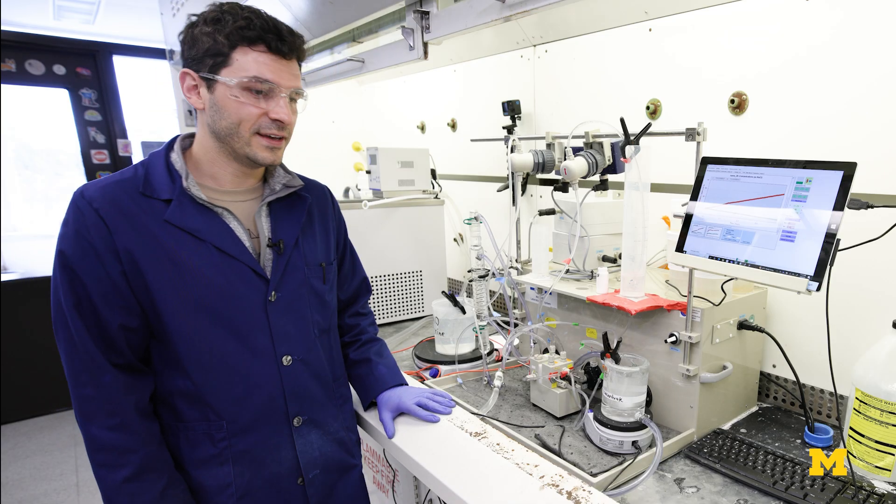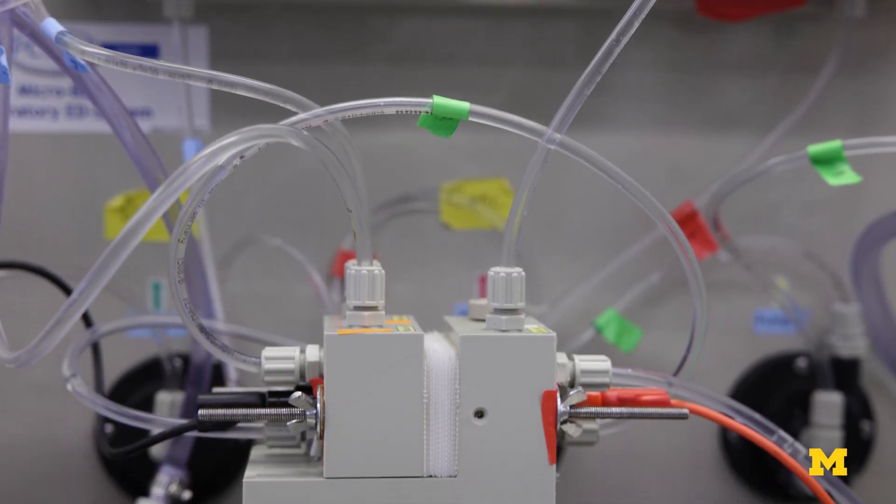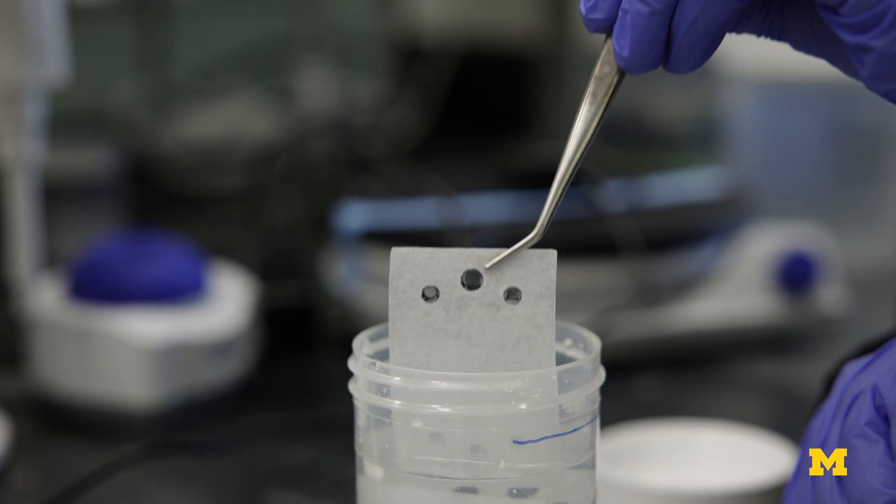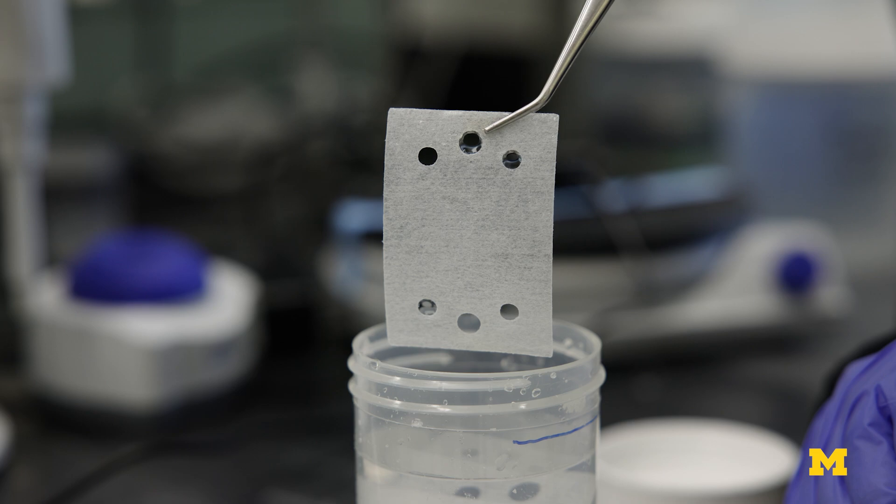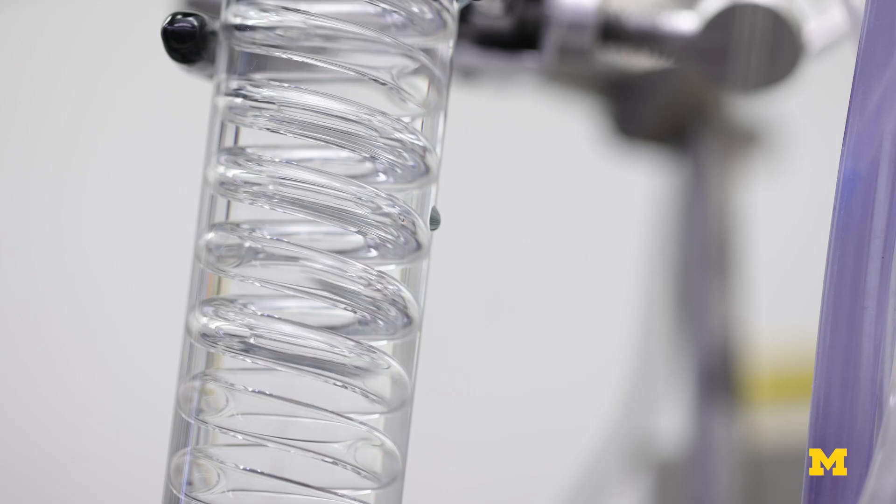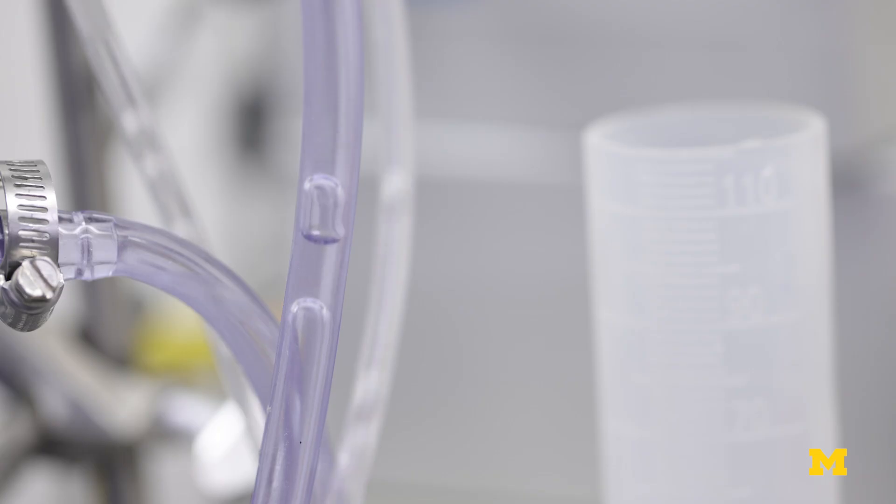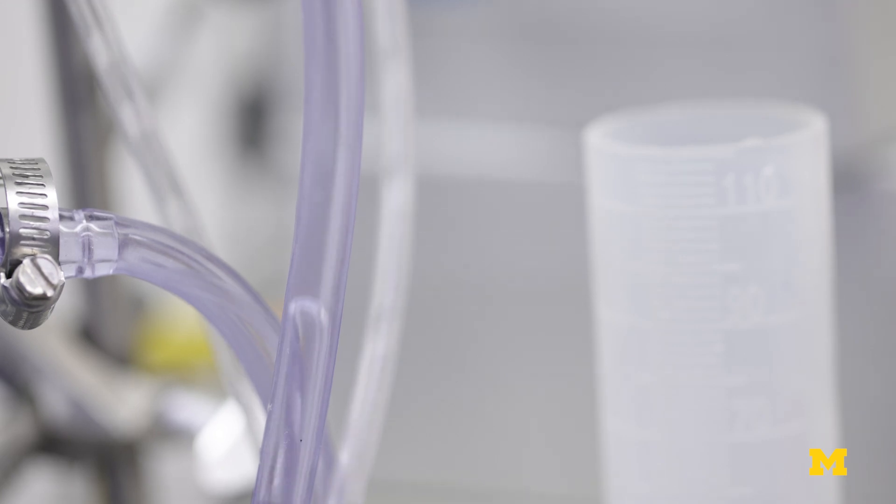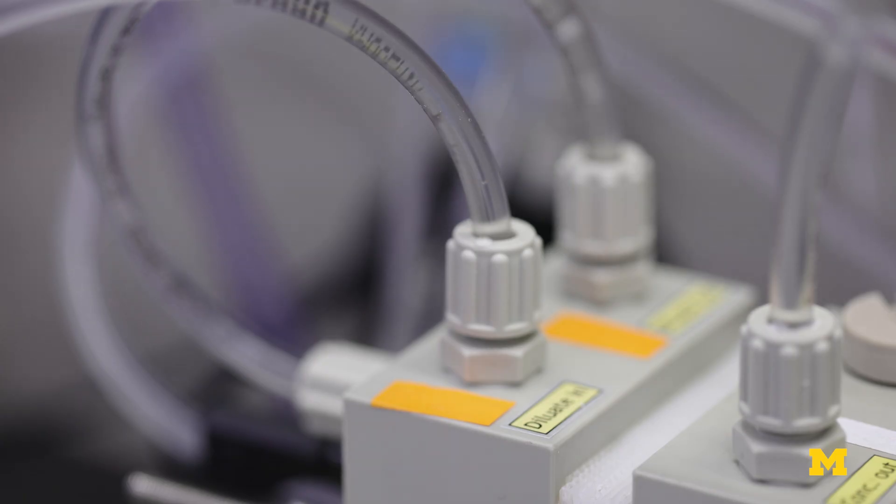This technology or this device is called electrodialysis and it uses ion-selective membranes to separate salt from the water. The way it works is we take a simulated or a model reverse osmosis brine and feed it to the device, and this device generates two different streams.